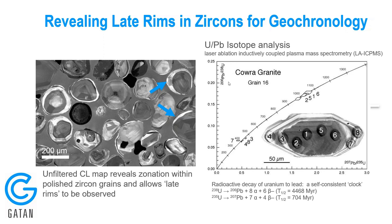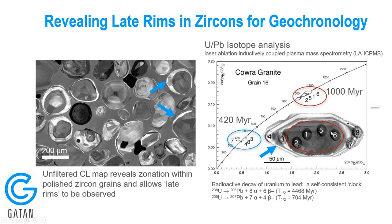We can determine the isotope ratio of 206Pb/238U versus 207Pb/235U. By mass spectrometry, we can check at each measurement point and determine what is the ratio of those isotopes, which gives us a lifetime — when those grains were formed. The outside of this grain was formed something like 420 million years ago, whereas the inside of that grain was formed about a billion years ago.